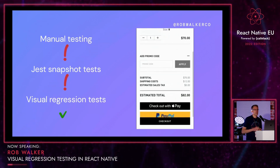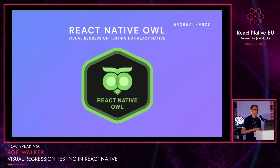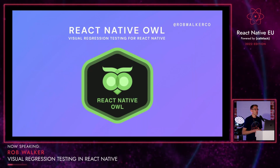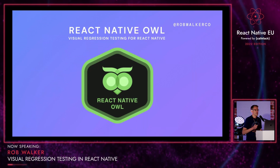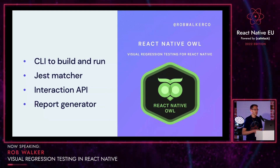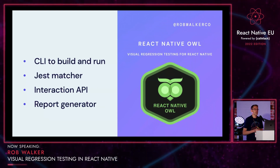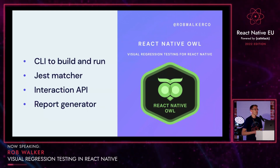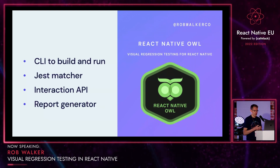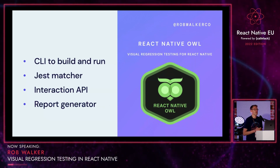So how can we implement some visual regression tests today? I'm going to show you a demo using React Native OWL, which is a visual regression testing library for React Native. The aim of React Native OWL is to make it as easy as possible to get started with visual regression tests. To achieve that, it has a few components: a small CLI to build and run your app for tests, a custom Jest matcher to compare baseline and latest screenshots, an interaction API that allows your tests to interact with the app in the simulator — pressing buttons, scrolling, entering text — and a report generator so you can easily find out what was wrong if there's an issue.